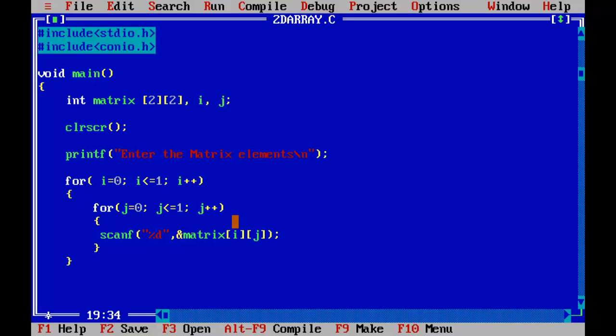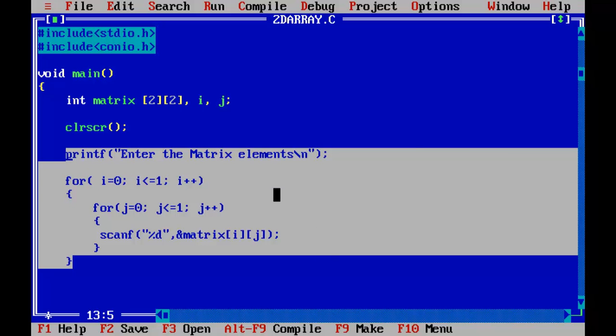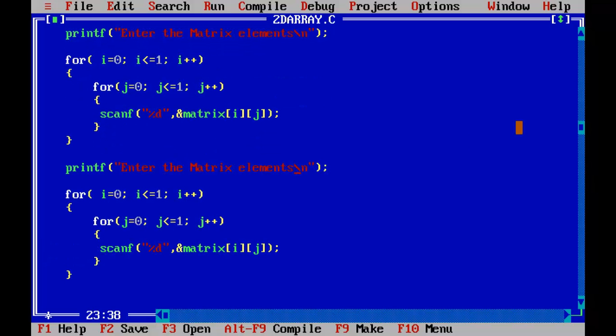j value incremented to 1. 1 is less than or equal to 1. Yes, it is. So i value remains the same. i value is 0, still i value is 0, j value is 1. That means we are referencing matrix of 0 and 1 location. That is the second location of the first row. When j changes to 2, it goes back to the upper loop, changing i value to 1. When i is 1, j remains 0 because j initializes its value again from 0. At that time, i is 1, j is 0. That means we are in the second row. So this happens every time. I'll just copy this and paste it below here.